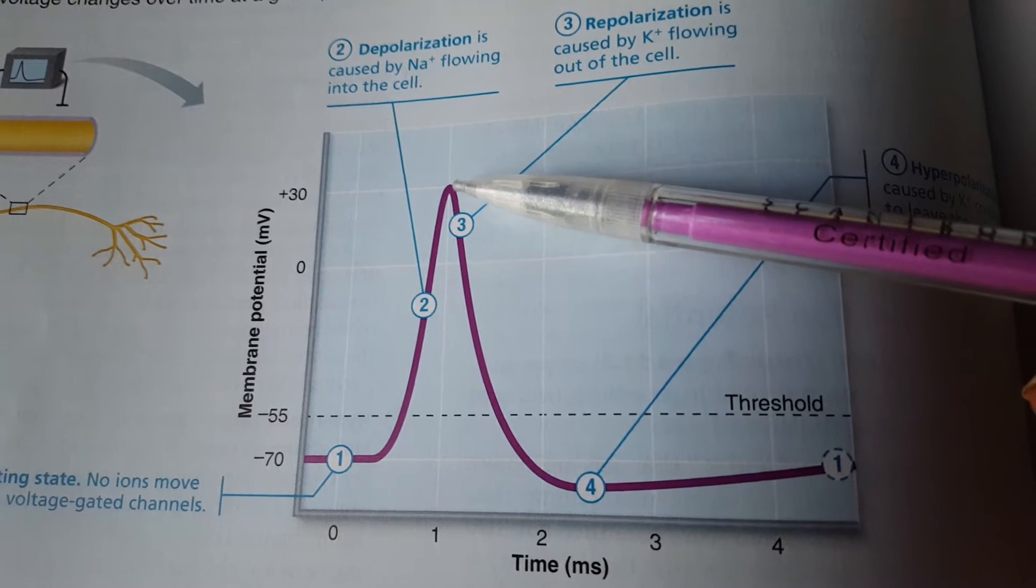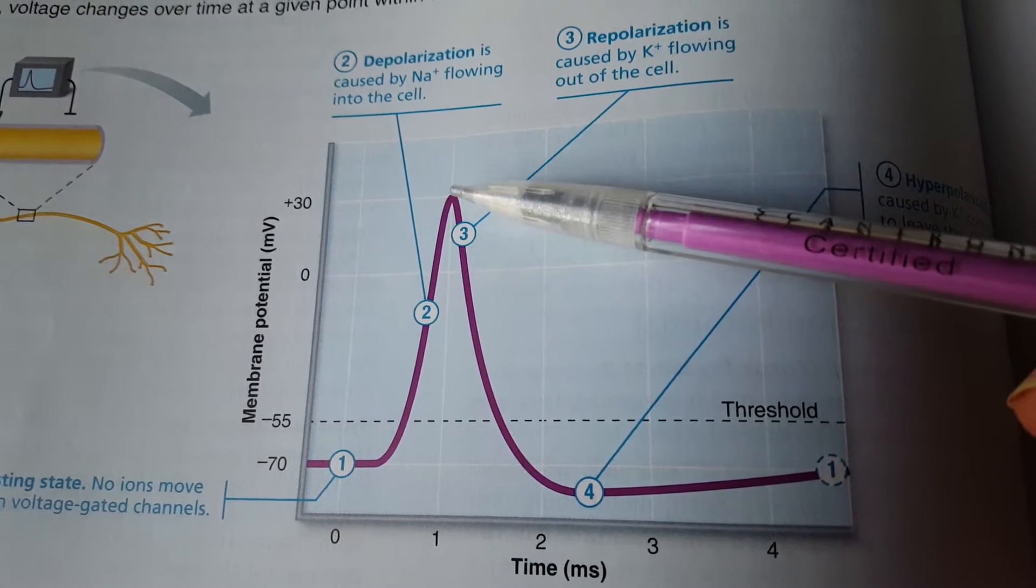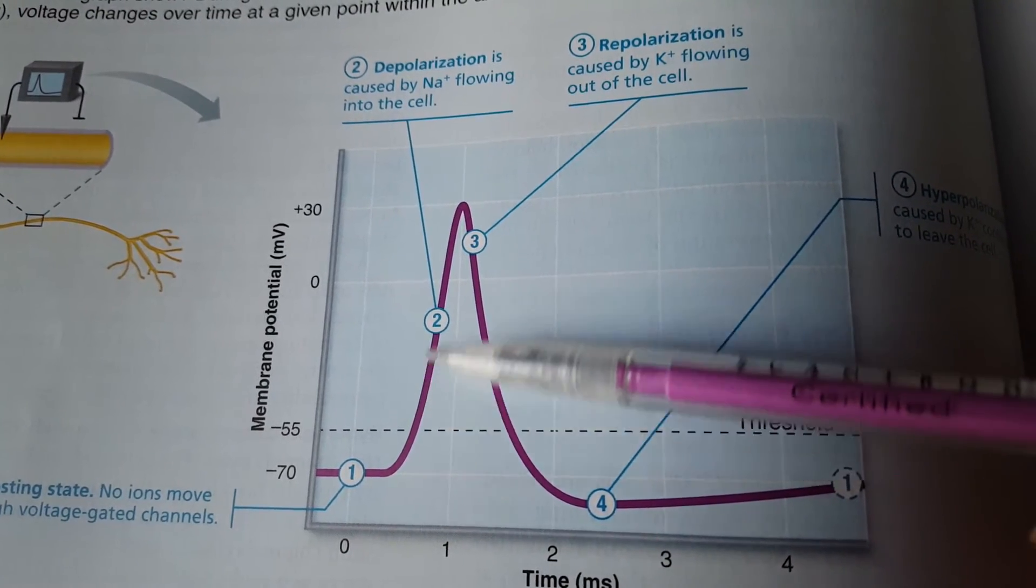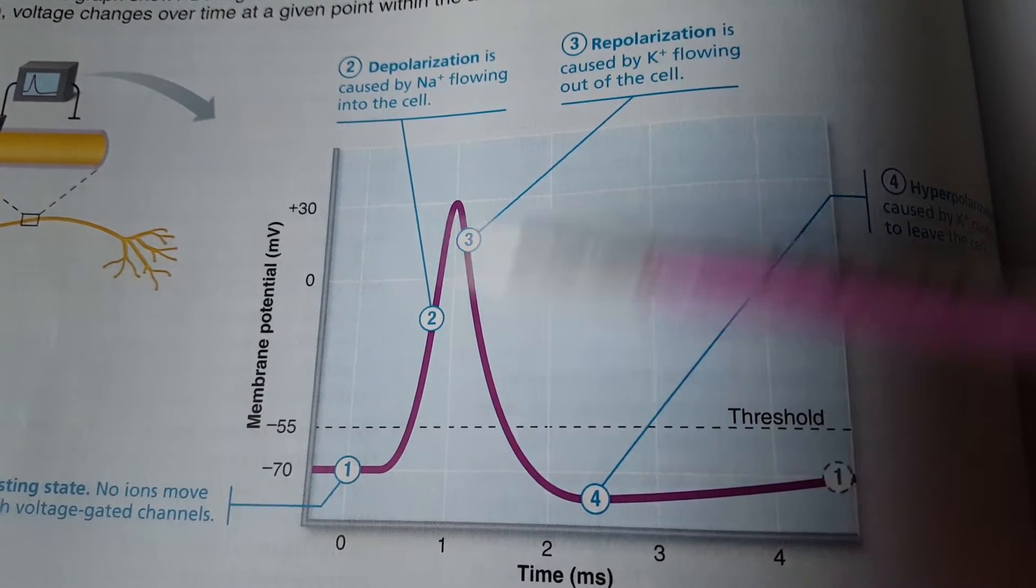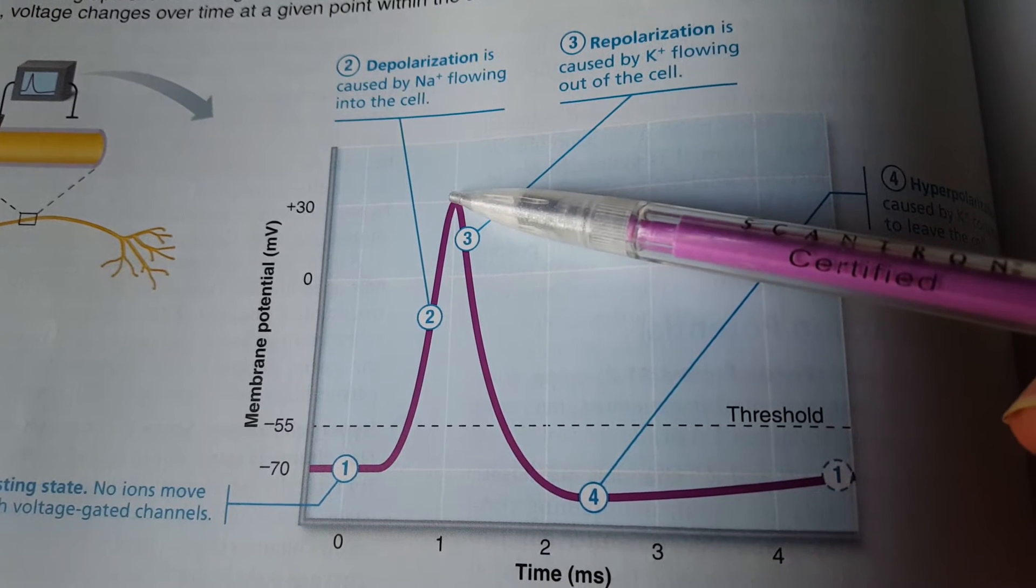Once we hit positive 30 mV, those sodium voltage-gated channels close. So for depolarization it's all sodium. Sodium opens at threshold, sodium closes at the peak.